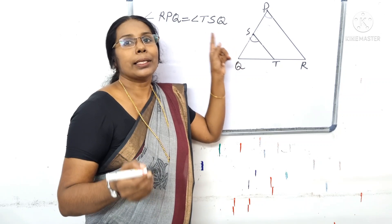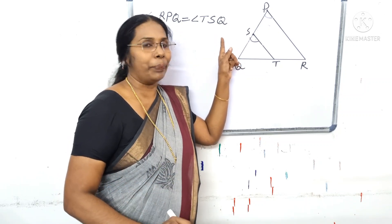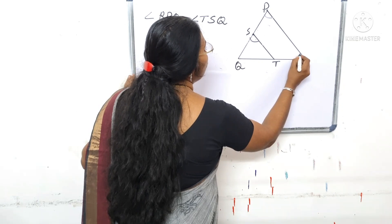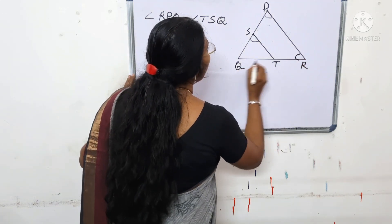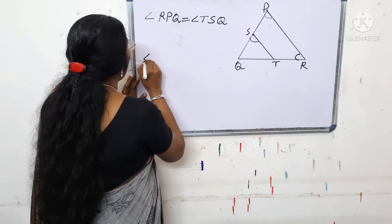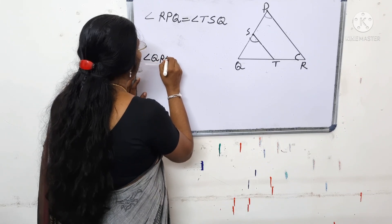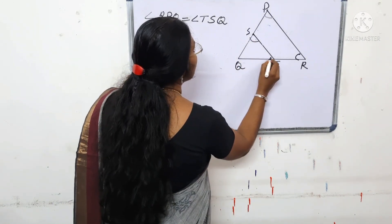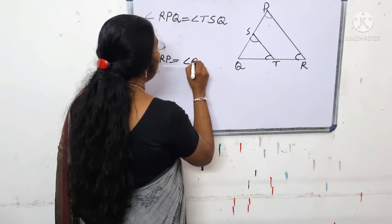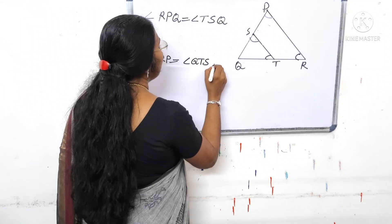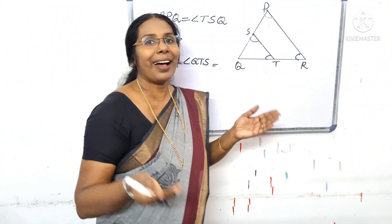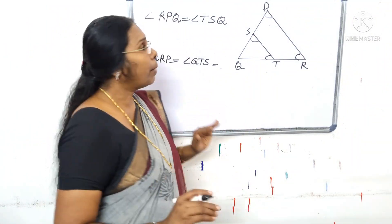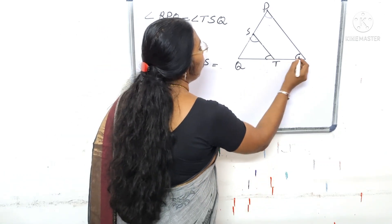Corresponding angles are equal. Now we will write these two angles: Q, R, P — Q, T, S. Corresponding angles are in the same way. Q, R, P — Q, T, S. These two corresponding angles are equal.